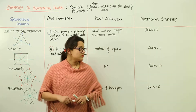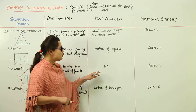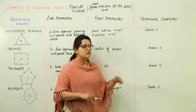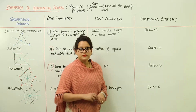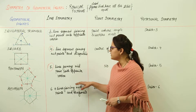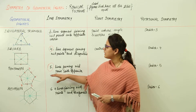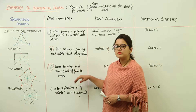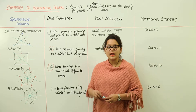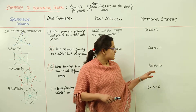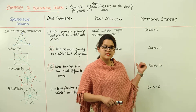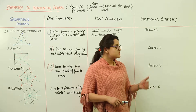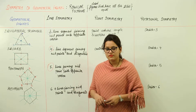What about point symmetry for the pentagon? It has no point symmetry, and it has a rotational order of 5. So we can conclude that the pentagon has 5 lines of symmetry, no point symmetry, and a rotational symmetry of order 5.